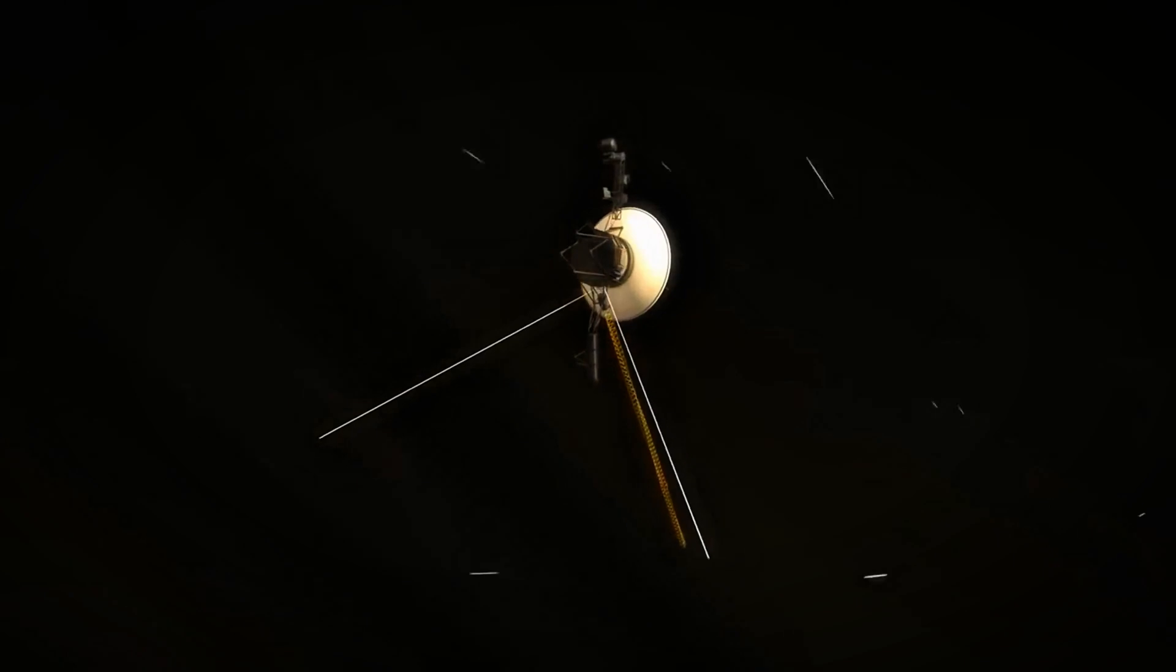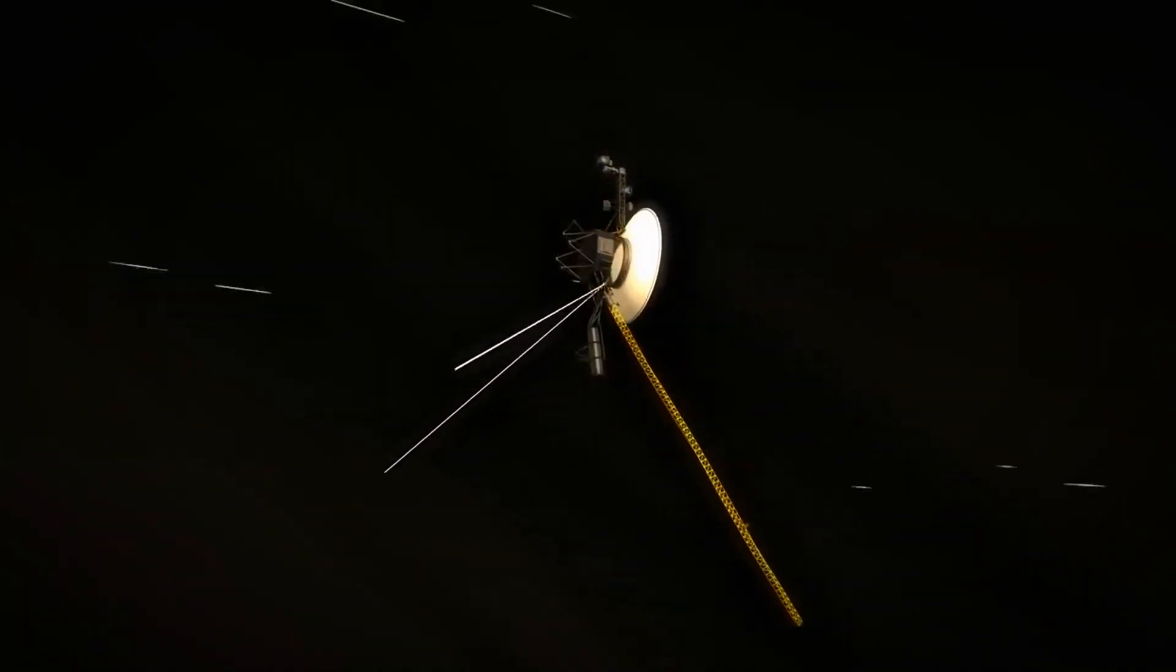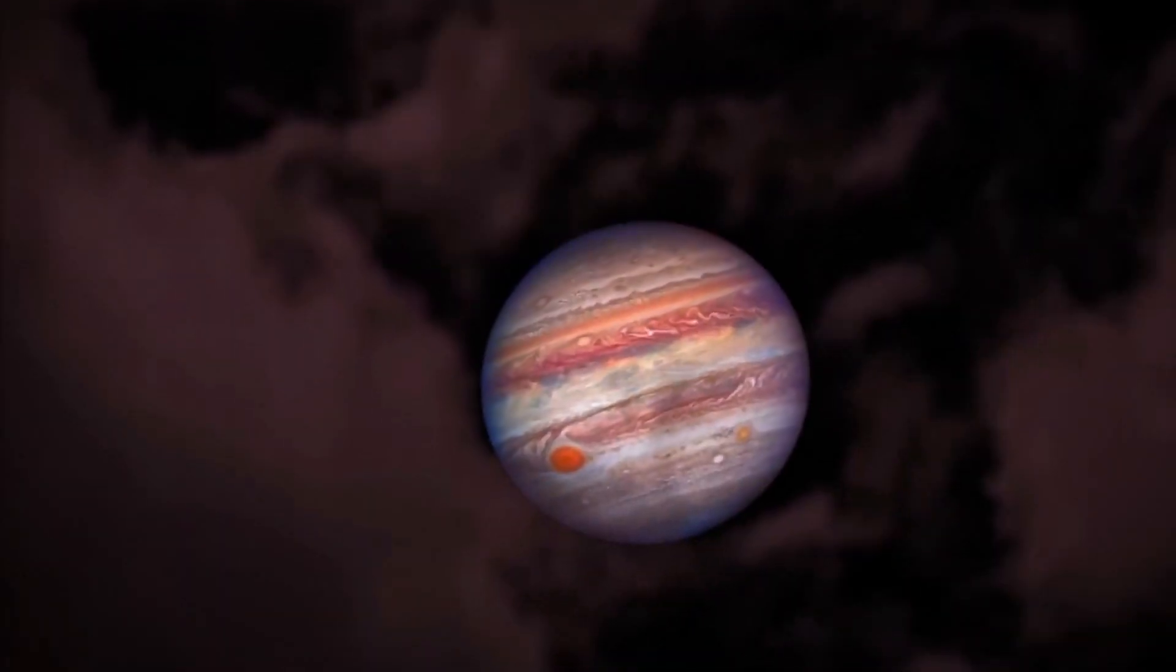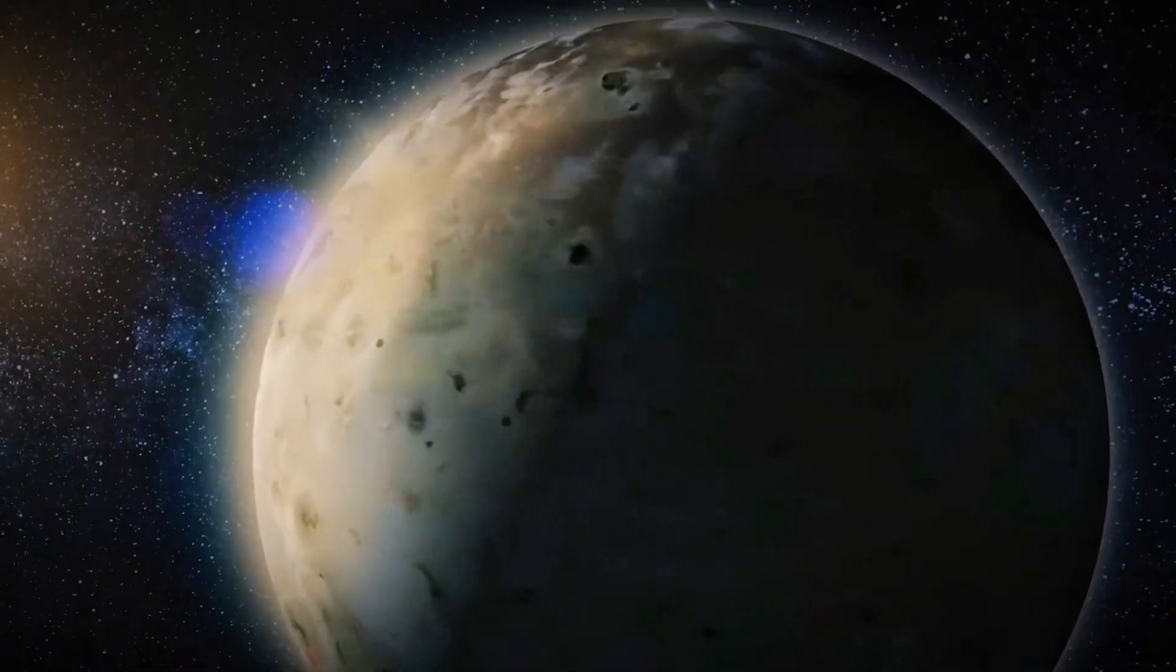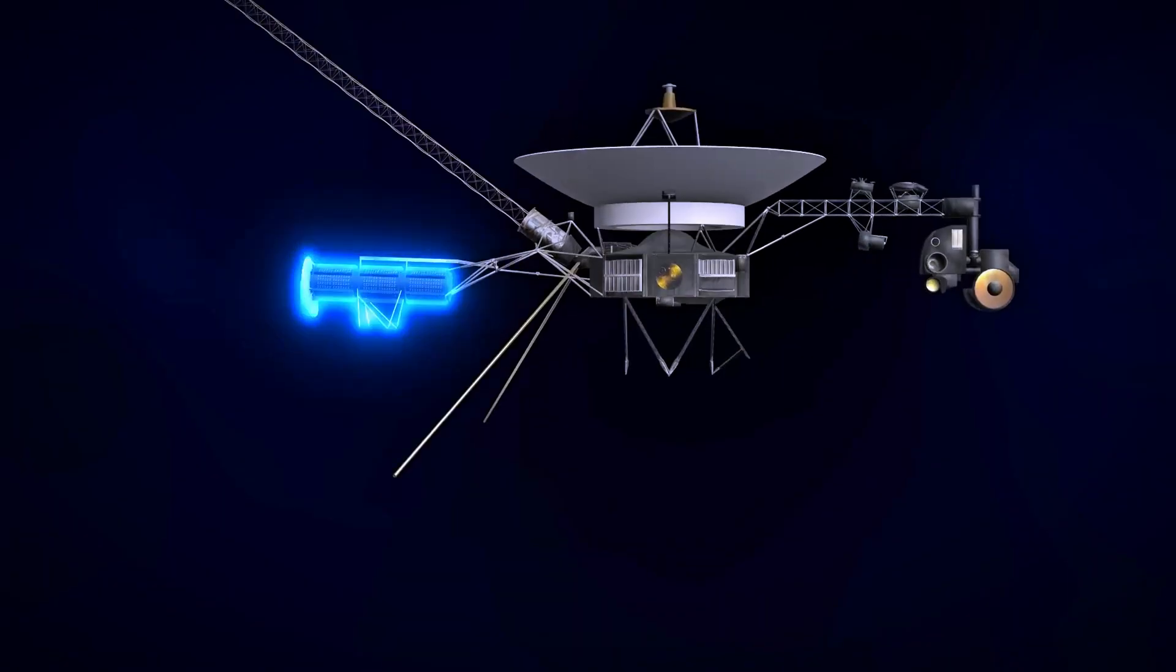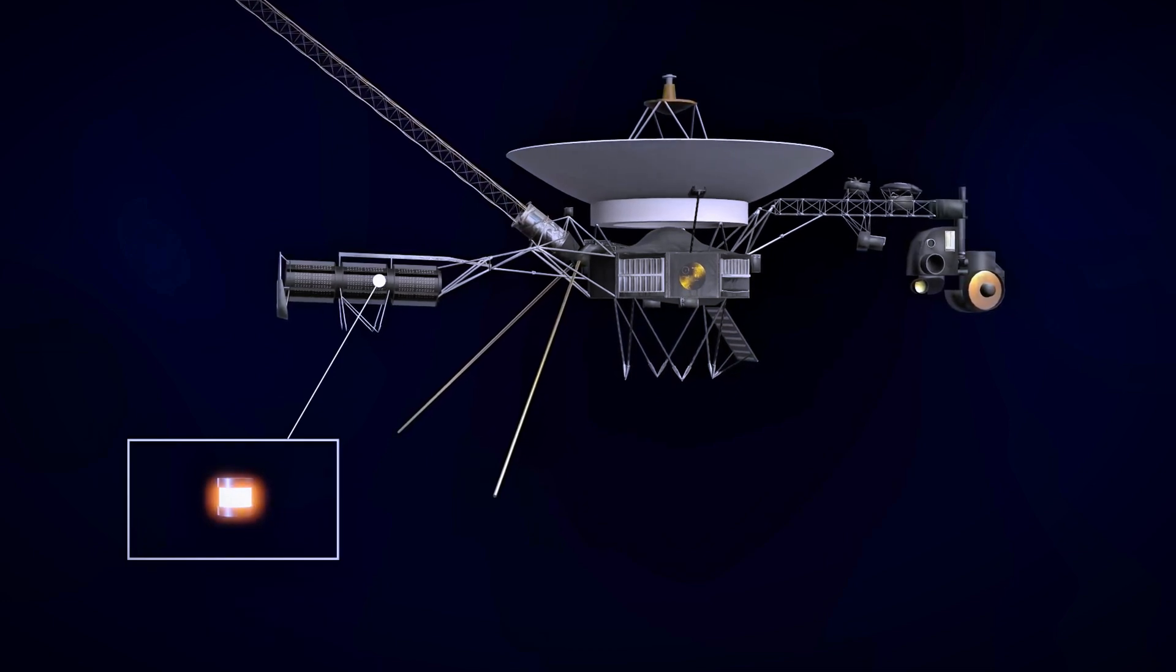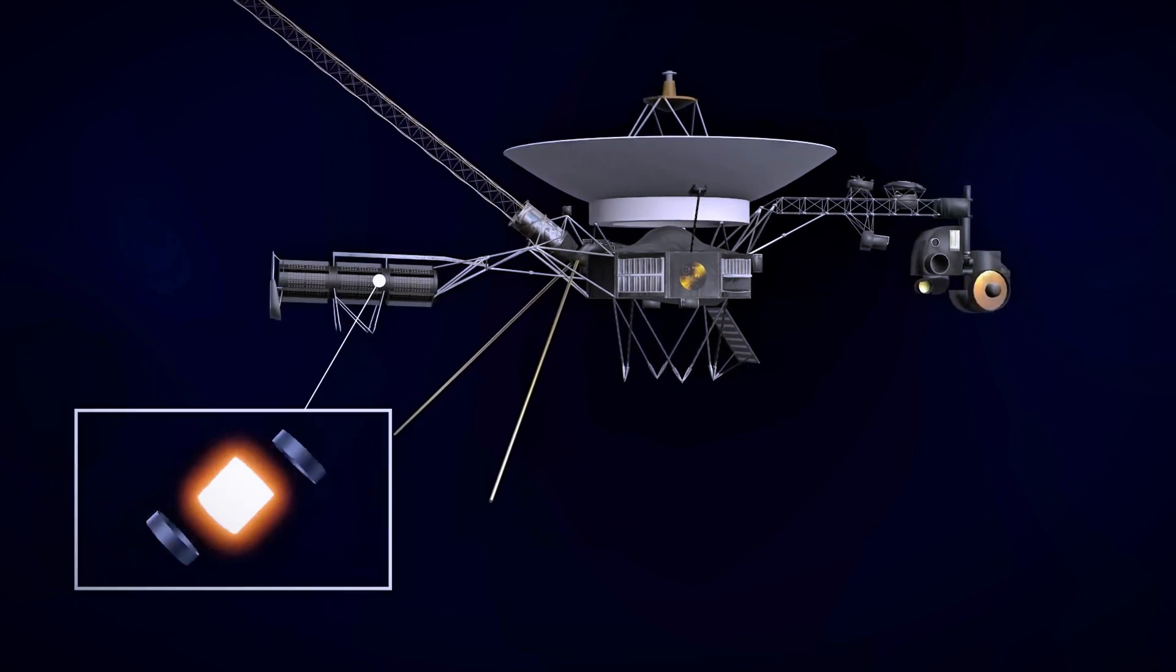Voyager 1 and 2 were equipped with a suite of sophisticated instruments, enabling them to conduct in-depth explorations of Jupiter, Saturn, and their moons. The spacecraft carried 11 instruments to study the planets and the interplanetary space they traversed.